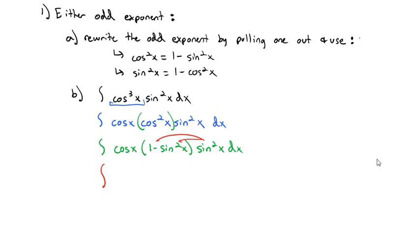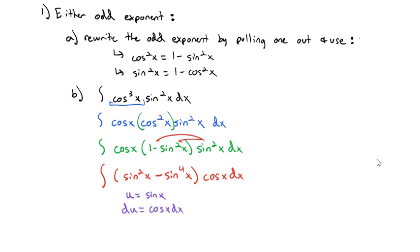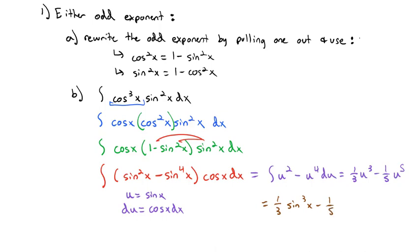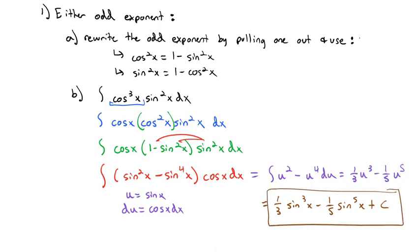If we distribute, we end up with sine squared x minus sine to the fourth x, times the cosine x dx on the outside. Now if we make u equal to sine of x, du is cosine x dx, and this simplifies quickly. We have the integral of u squared minus u to the fourth du, which is 1/3 u cubed minus 1/5 u to the fifth. Substituting back, that's 1/3 sine cubed x minus 1/5 sine to the fifth x plus a constant. And we found our integral.